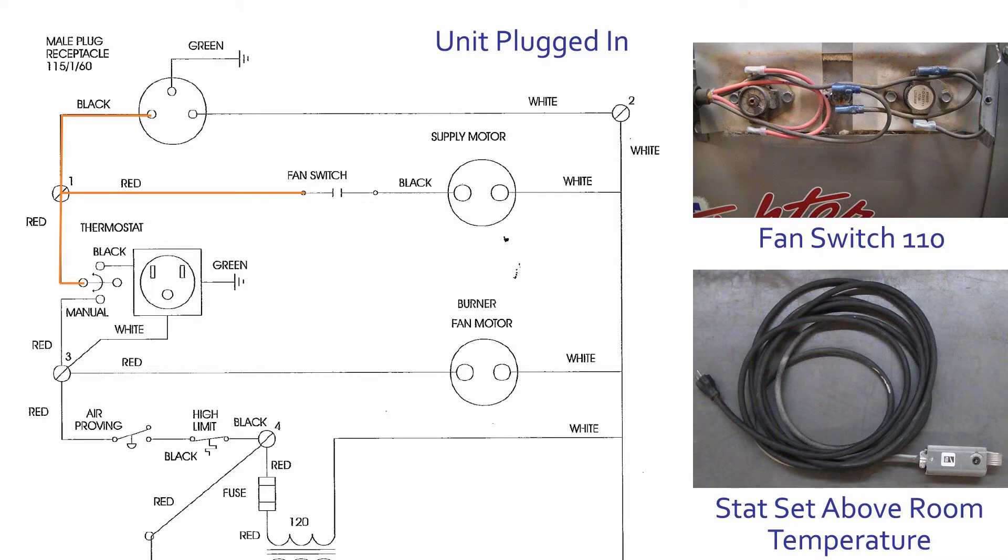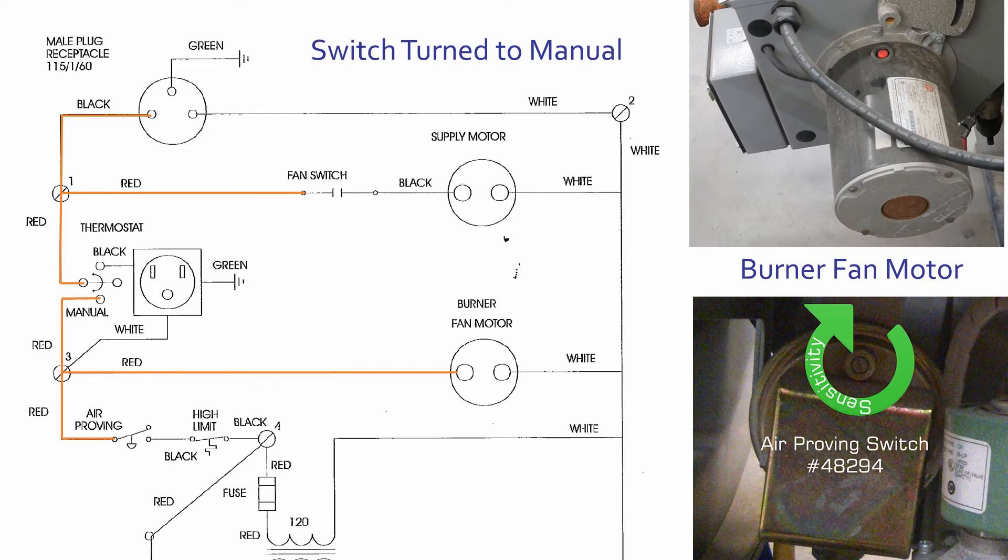If the thermostat setting is set below the actual room temperature, the unit will not turn on. If the thermostat is calling for heat or the three position toggle switch is set to manual, the burner fan motor will then activate.